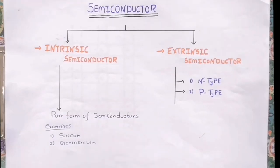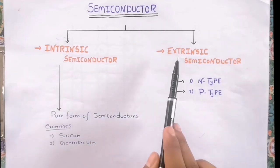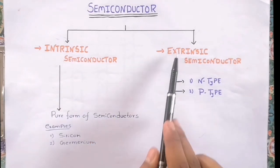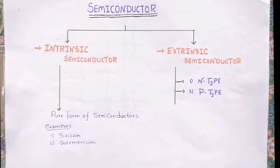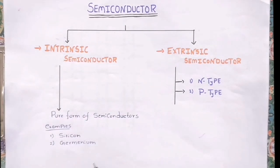Hello friends, welcome to my channel. You are watching Electronic Stuff. Today in this video we are going to understand about intrinsic and extrinsic semiconductors. These are two forms of semiconductors which are classified by adding of impurities.